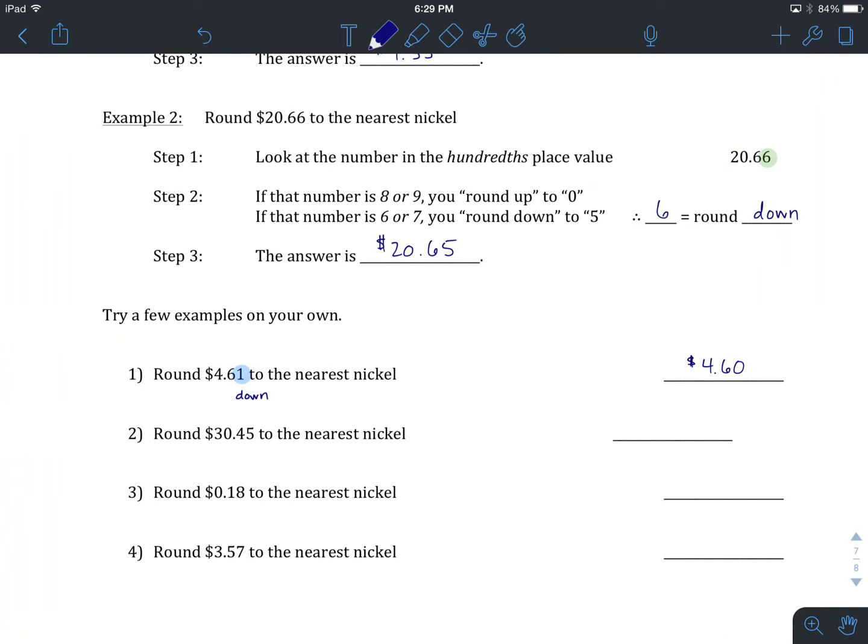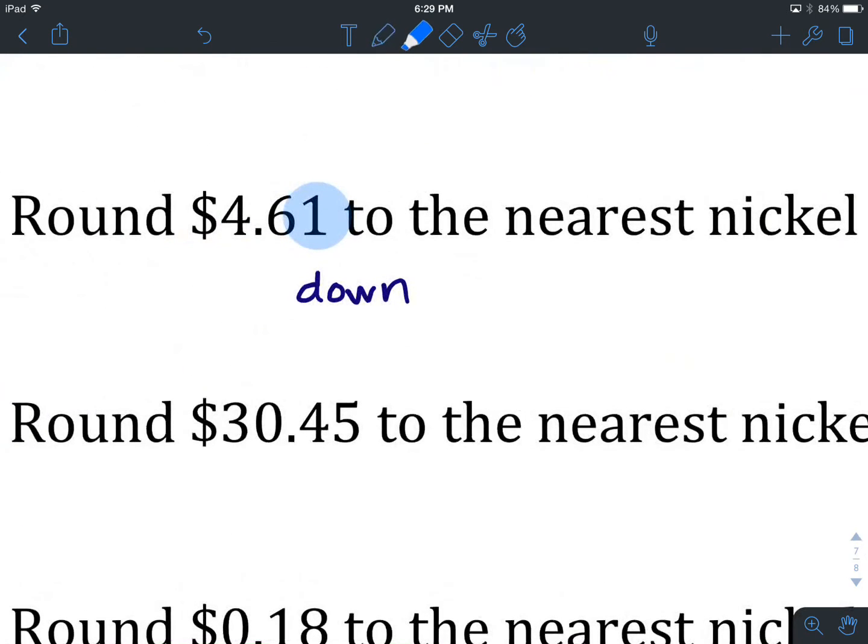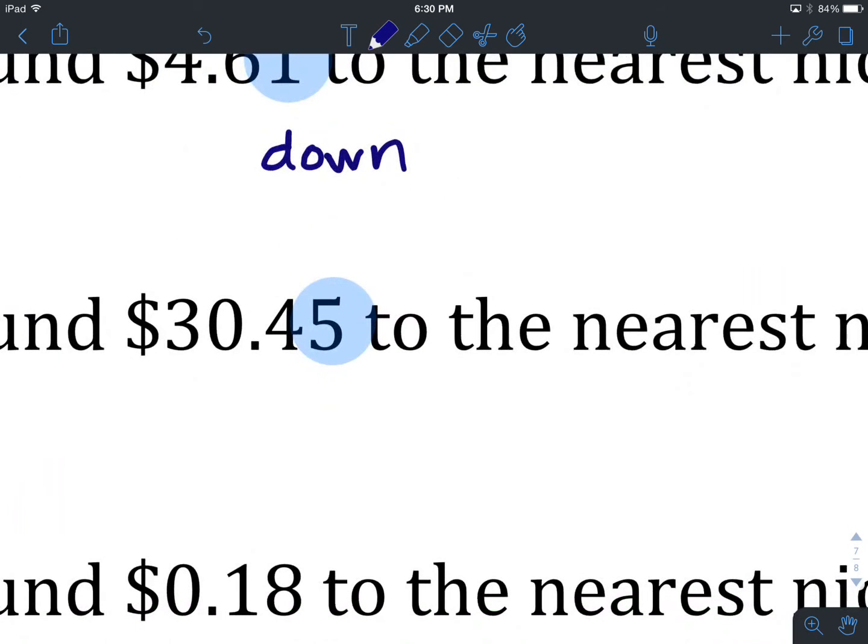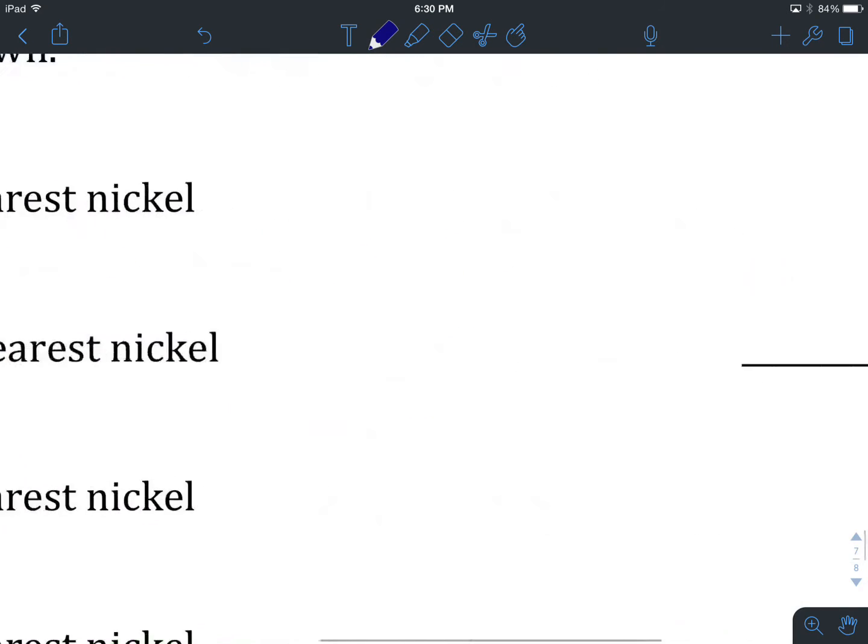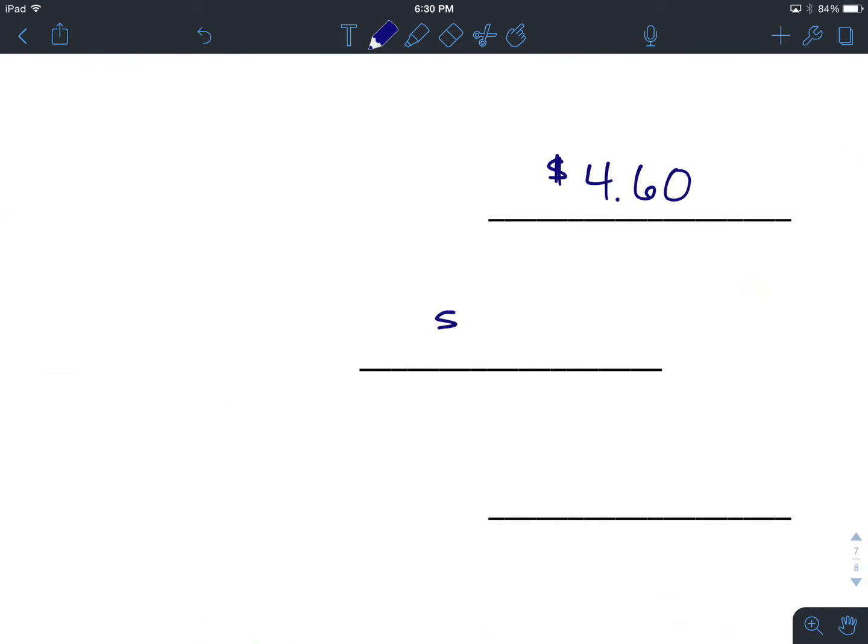You've given number two a try. Let's have a look. We're going to round $30.45 to the nearest nickel. We look. It's $30.45. At this point, we've encountered something unique. We are neither going to round up nor round down since it's already on a nickel value. A number that we can count to by skip counting by fives. So we are not going to round at all. We are going to keep it exactly as it is, which is $30.45.